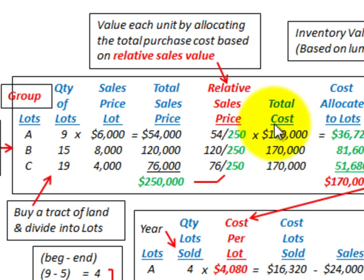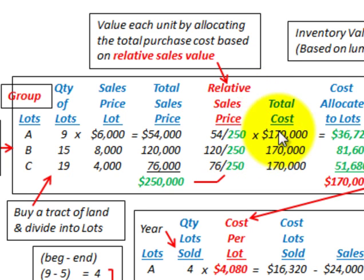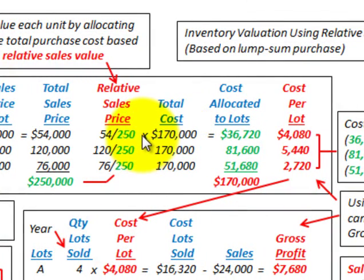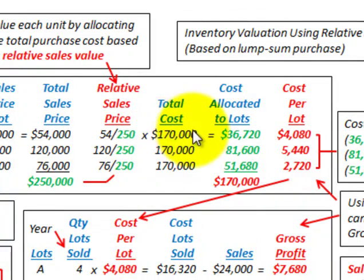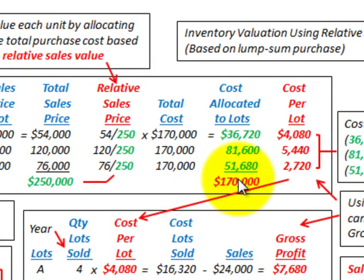You take that fractional amount times the total cost. Our total cost was $170,000 — we bought unimproved land for $110,000 and added $60,000 in improvements. So the relative sales value fraction times $170,000 gives us the cost allocated per lot group. For lot A, that comes to $36,720 allocated out of the total $170,000.